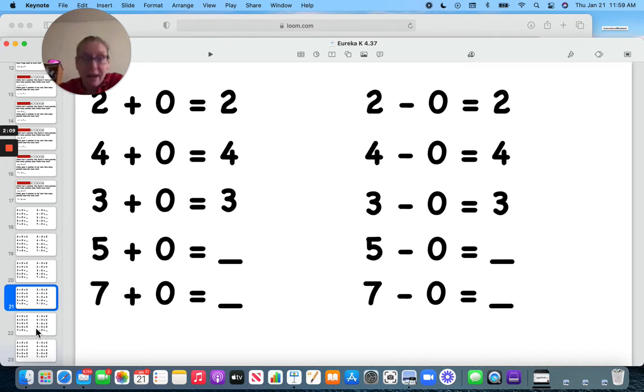Five. You have five and you don't get any more, so you still have five. Now you have five and you don't lose any, you still have five. And seven.